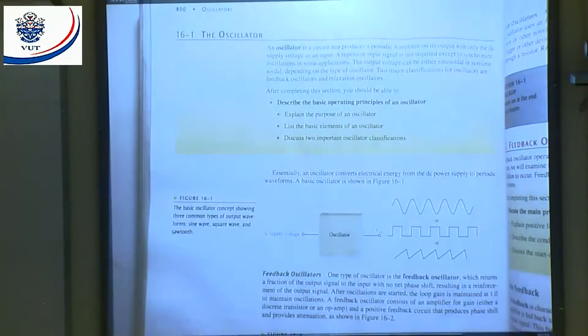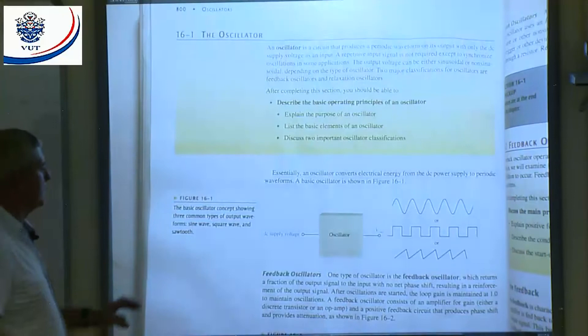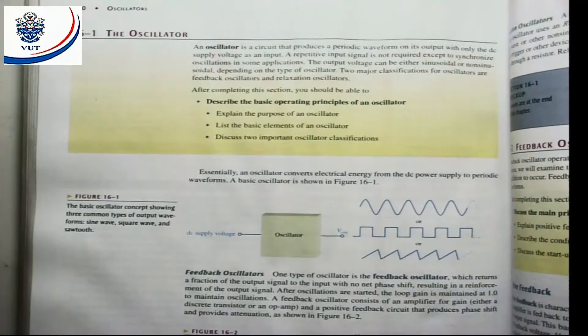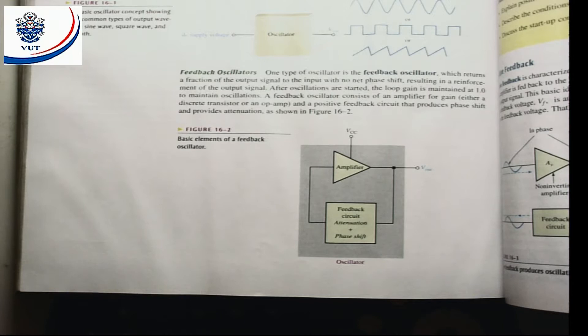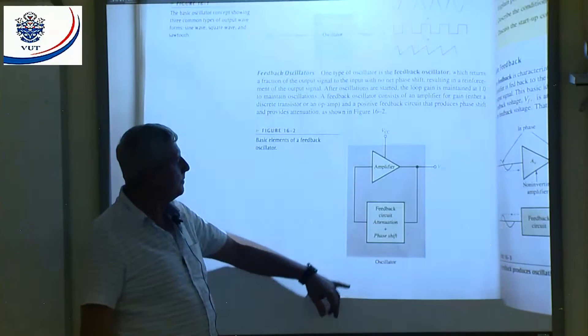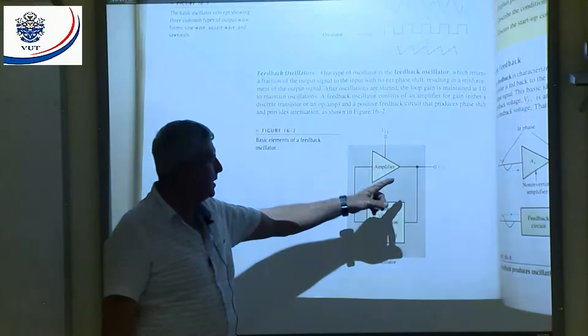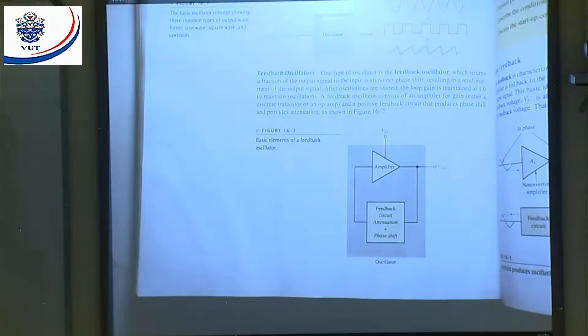It will oscillate and give us an output with a DC supply. Now let's talk about the feedback oscillators and what the conditions are. We have an amplifier with a DC supply and a feedback circuit. In the feedback circuit we have attenuation and phase shift. Depending on what the phase shift is across the amplifier, that will determine my phase shift, but it will be positive feedback.